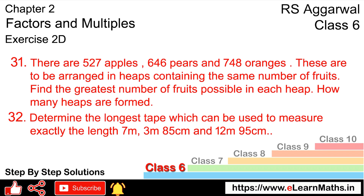Let's do question number 31 of exercise 2D, that is factors and multiples. Question number 31 is: there are 527 apples, 646 pears and 478 oranges.